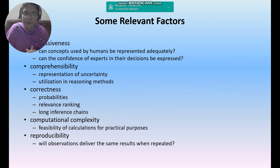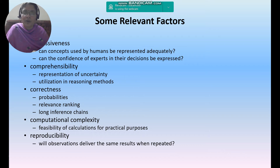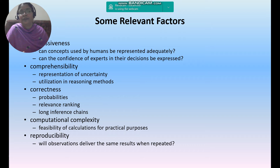What are some relevant factors? Number one, expressiveness. Number two, comprehensibility. Number three, correctness. Number four, computational complexity. Number five, reproducibility. What is expressiveness? Can concepts used by humans be represented adequately? Can the confidence of experts in their decisions be expressed effectively? Humans being able to express their problems and decisions — that comes under expressiveness.